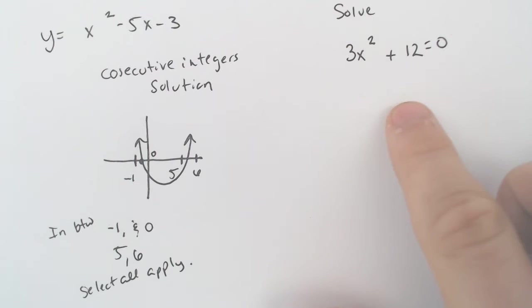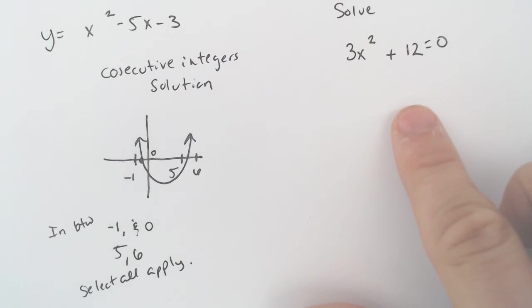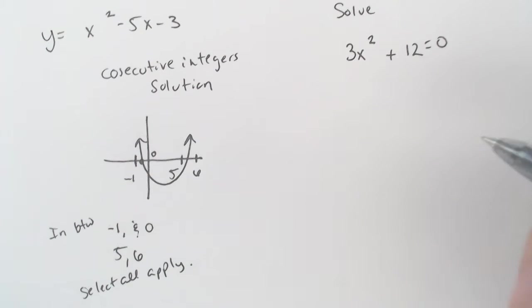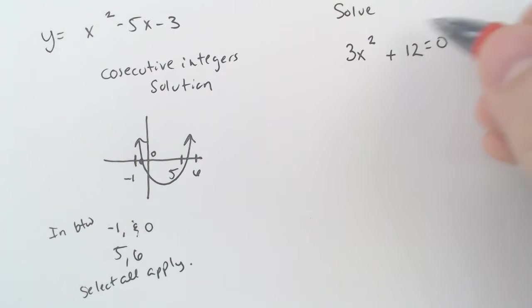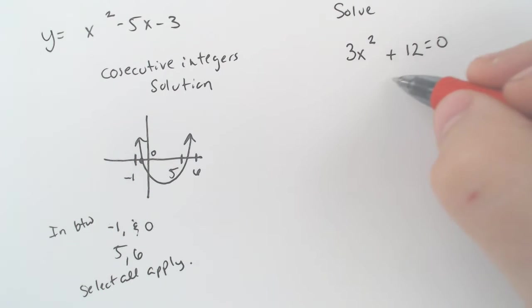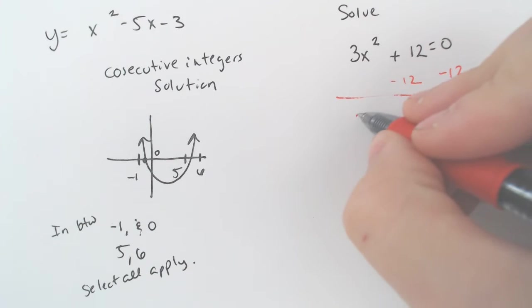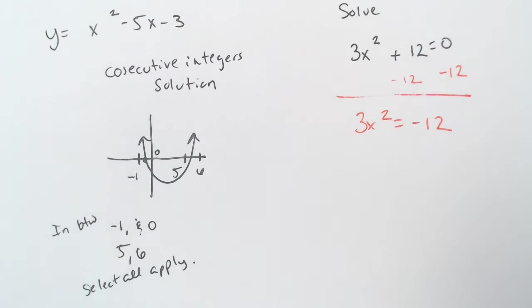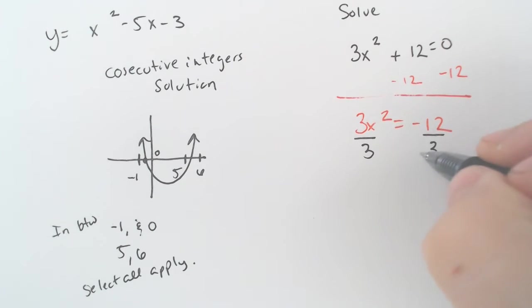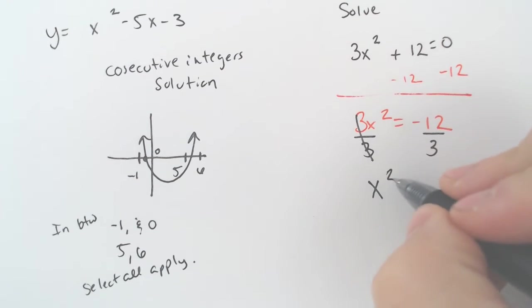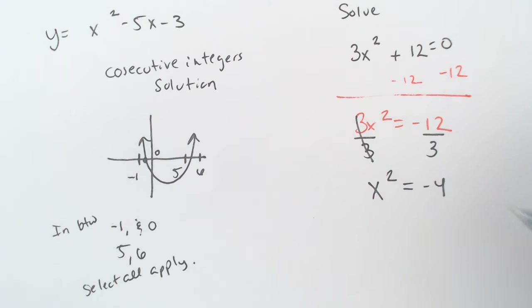In order to solve this one, if you type that in your graphing calculator, it wouldn't really work because it's going to actually be an imaginary solution, which you wouldn't necessarily know right off the bat. You could use the quadratic formula. You could also divide everything by 3 in the beginning, but I would recommend solving with square roots by subtracting the 12, getting it to equal negative 12, dividing by 3 then because it feels more natural, and get x squared is equal to negative 4.